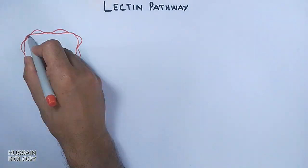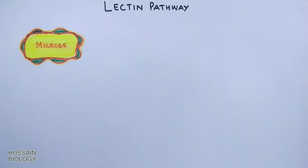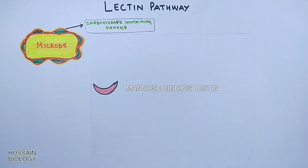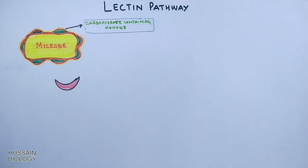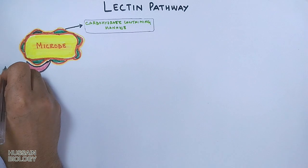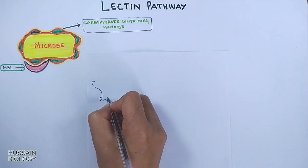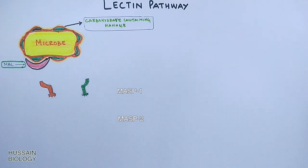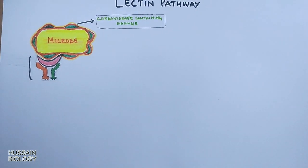In this diagram, we see a microbe with carbohydrates in the form of mannose on its membrane. The lectin molecule, termed MBL (mannose-binding lectin), binds to the mannose on the pathogen membrane. In the next step, MASP1 and MASP2 bind to the MBL-mannose complex, forming the final C1-like complex.